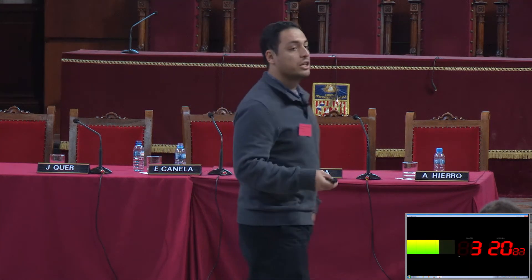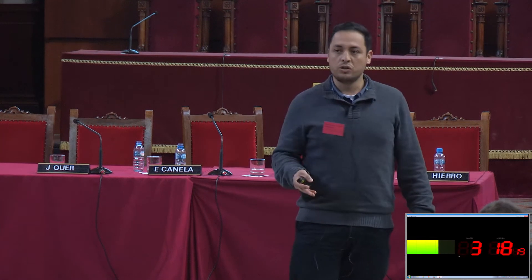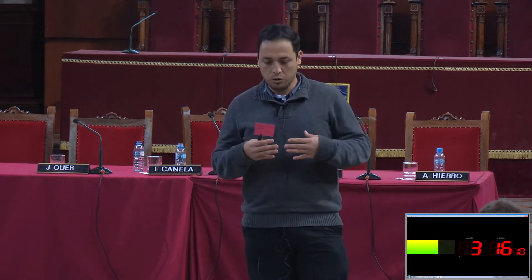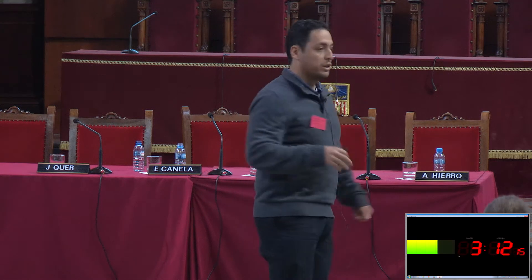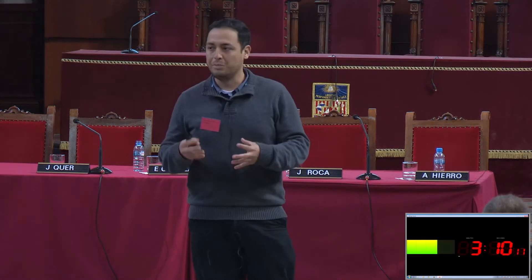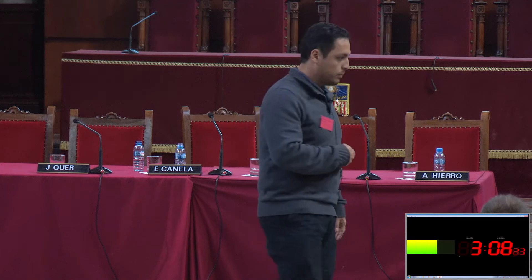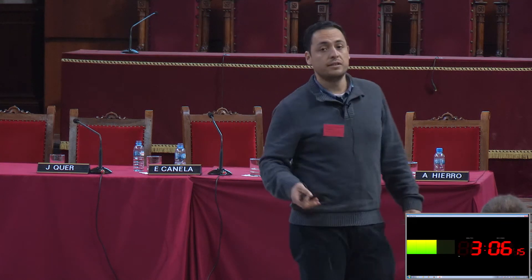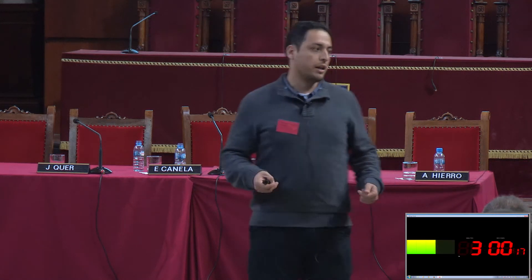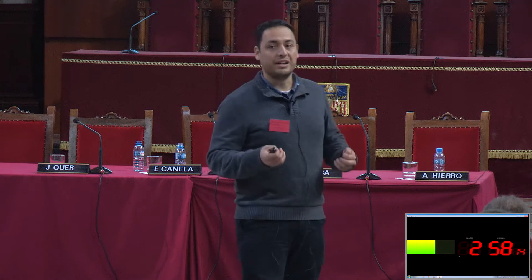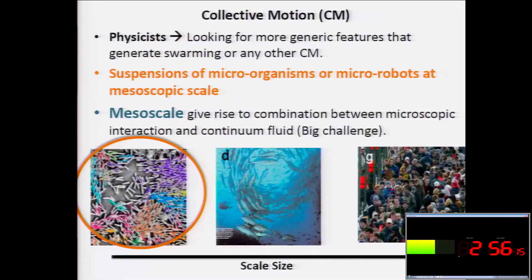We also have engineers that try to design robots to make tasks collectively with no central control. As a physicist, we want to have a more universal understanding of collective motion, looking for more generic features that generate this kind of collectiveness — this swarming, for example in the case of bacteria.